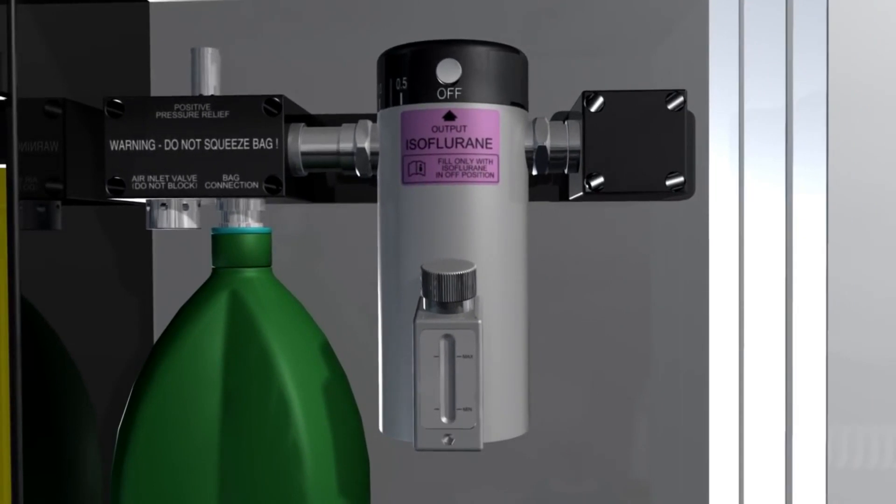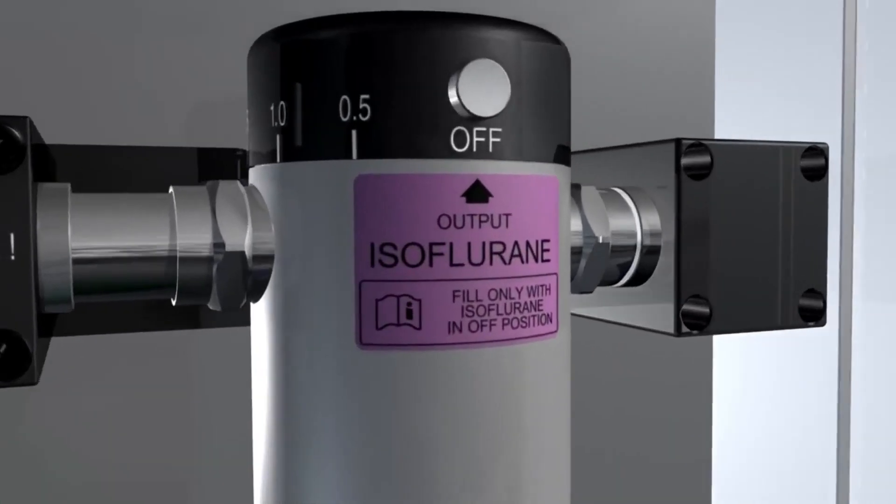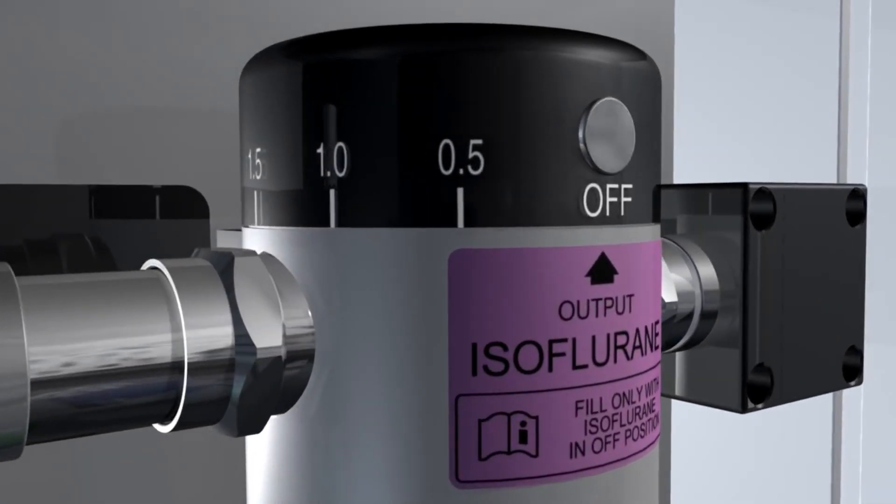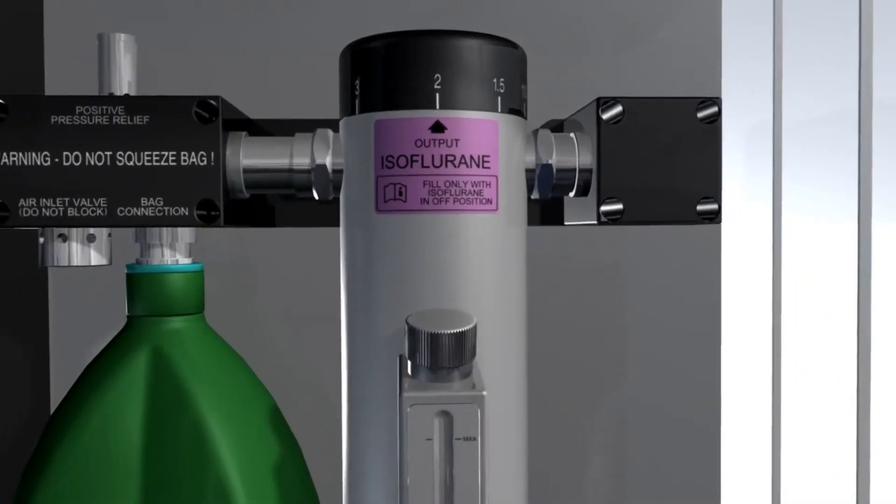The plenum vaporizer is driven by positive pressure from the anesthetic machine and is usually mounted on the machine. The performance of the vaporizer does not change regardless of whether the patient is breathing spontaneously or is mechanically ventilated.